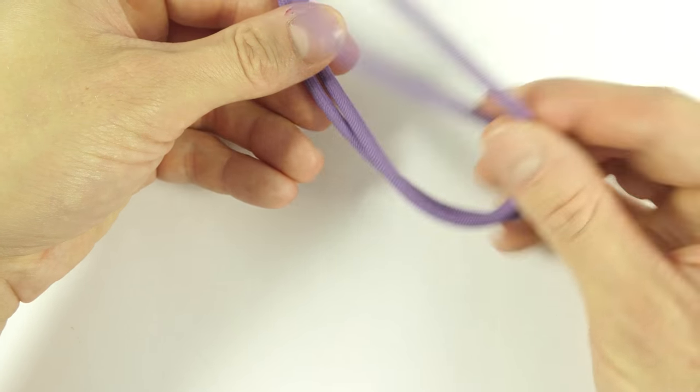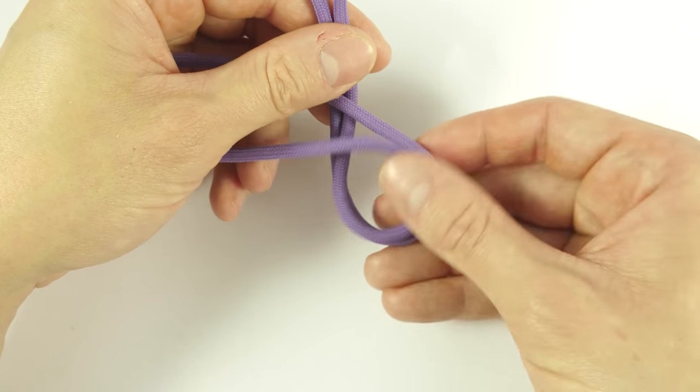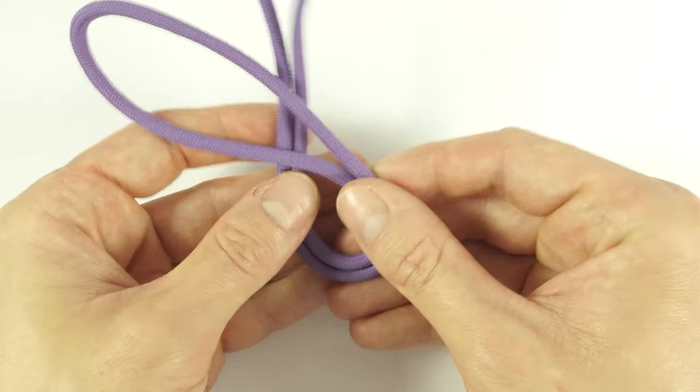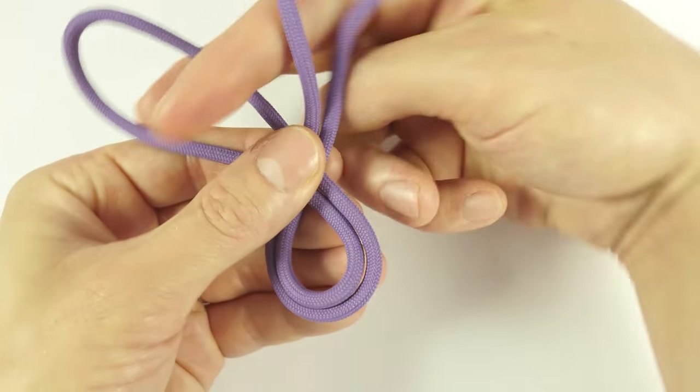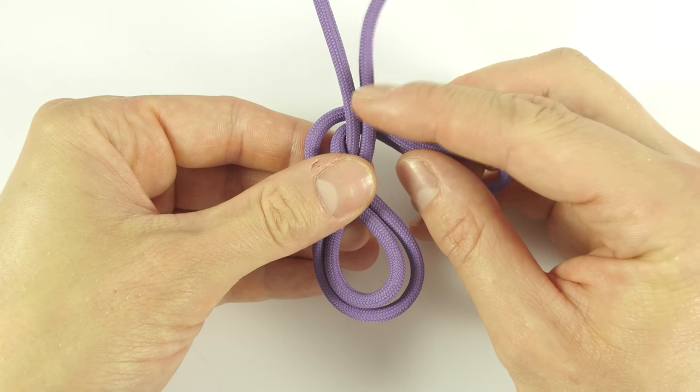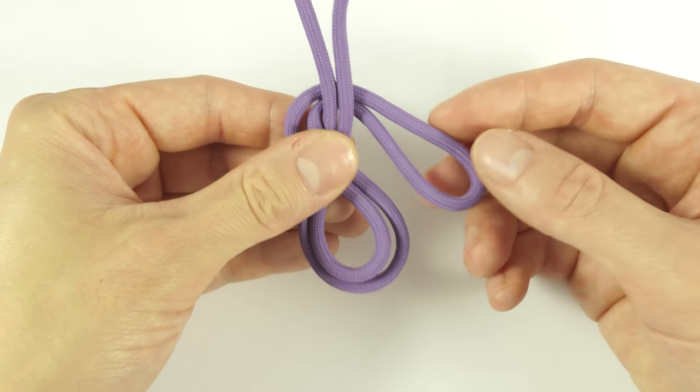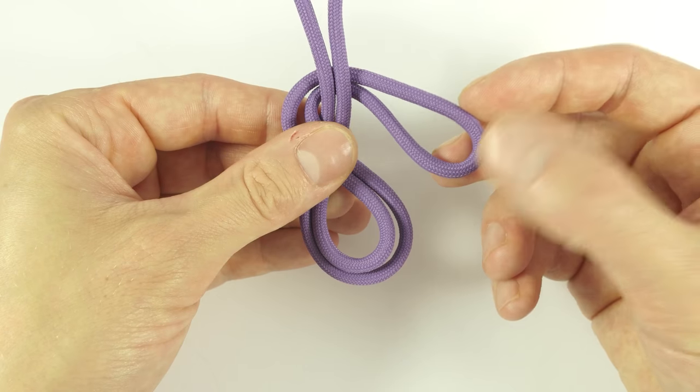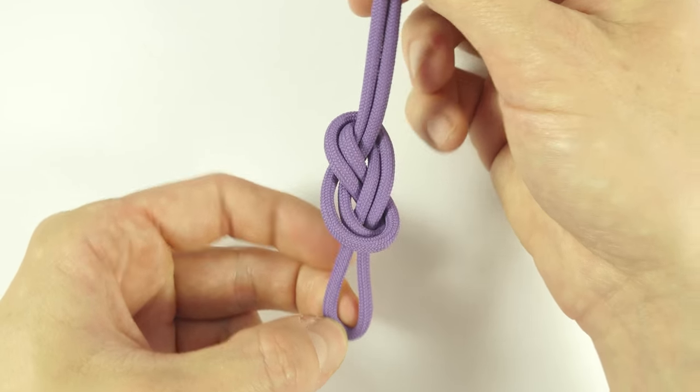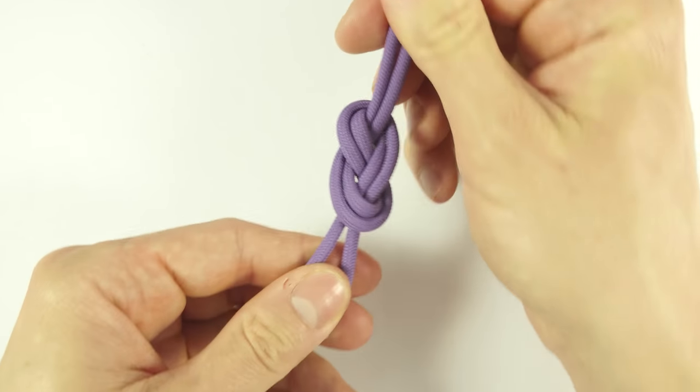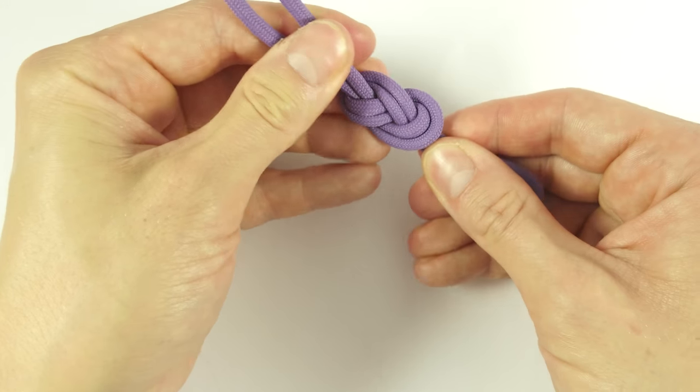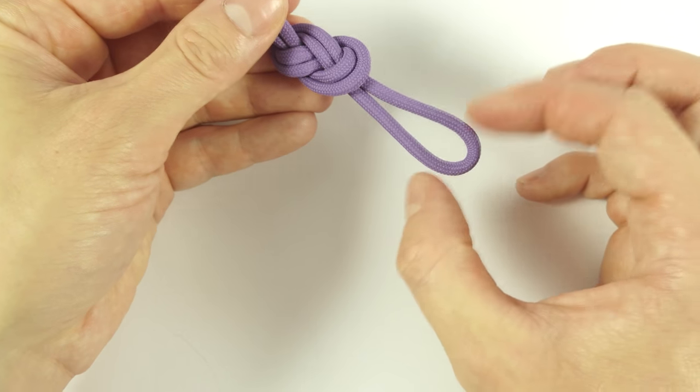Just like in the figure 8 knot. Then we create a figure 8 passing under the standing end, and finally we tuck the end of our bight into the bottom loop, creating a figure 8 knot as well as a loop at the bottom.